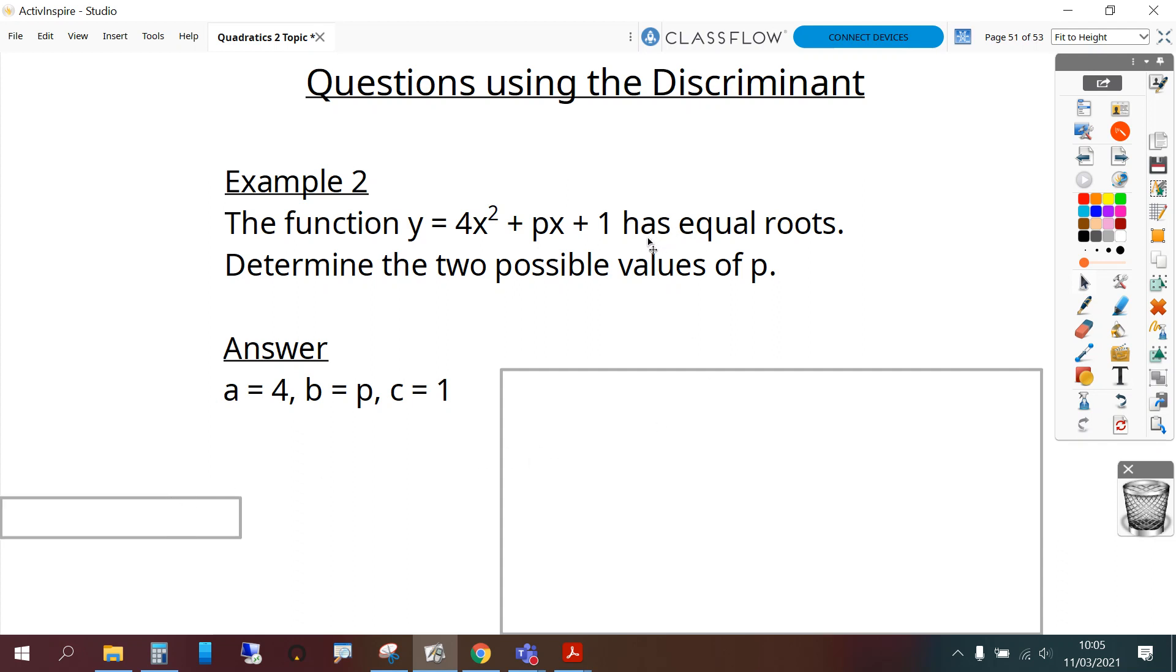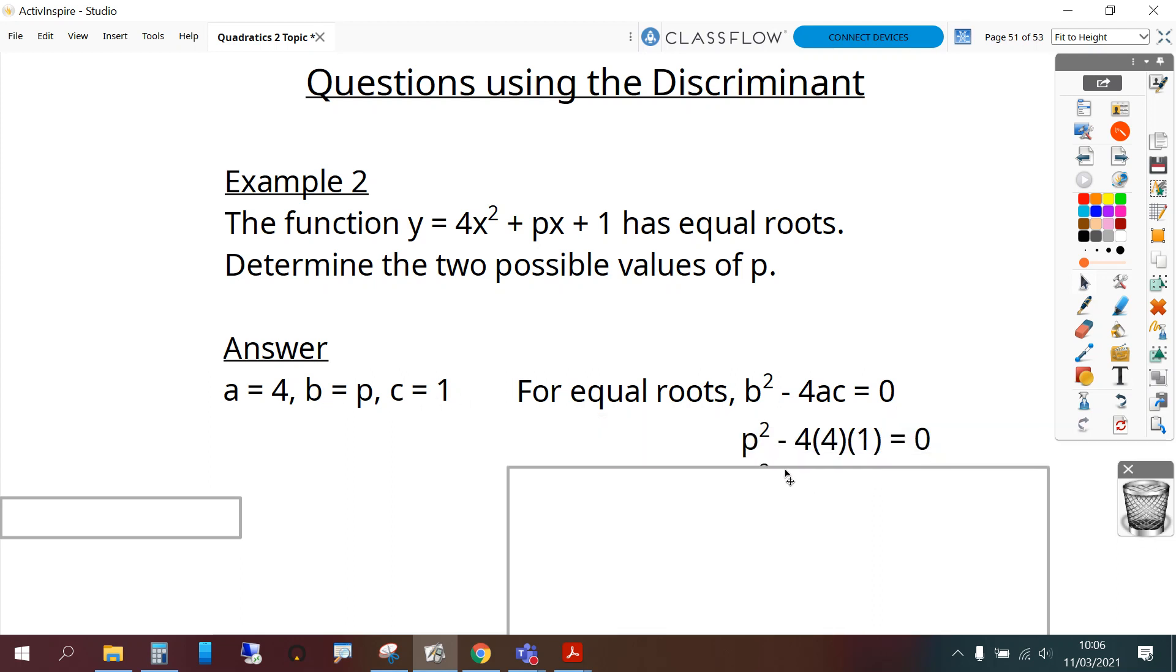Now we're told that it's equal roots. So we can straight off start by writing b squared minus 4ac equals 0. And now substitute a, b and c in. And tidying that up we get p squared minus 16 equals 0.